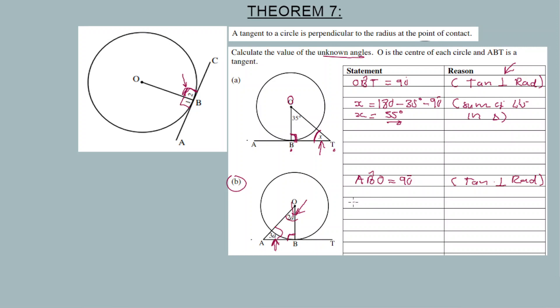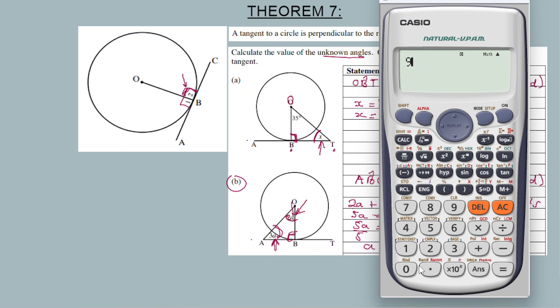The angles sum to 180 degrees, sum of angles in triangle. So 2A plus 3A equals 180 minus 90 degrees. So 5A equals 90, so we need to calculate the value. 90 divided by 5, A is equal to 18.